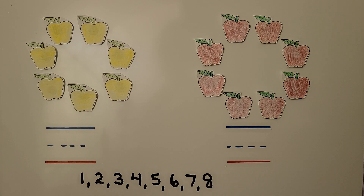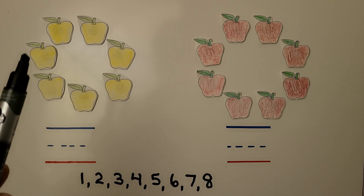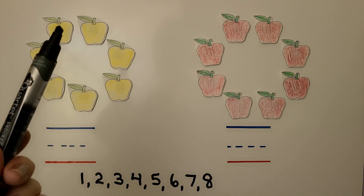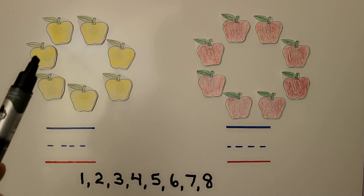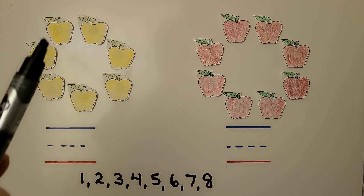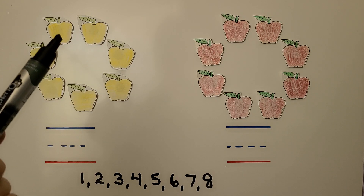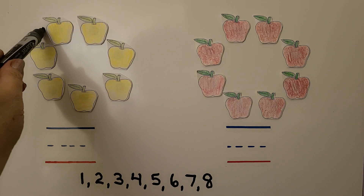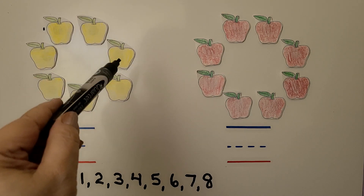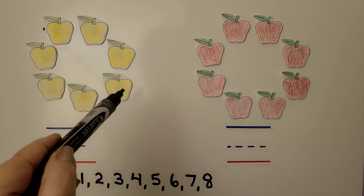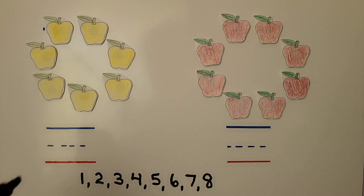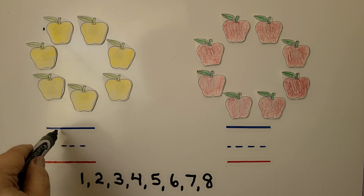We have to be very careful that we don't count the apples two times. So if we're going to start here, that'll be the first apple we count, then this will be the last apple we count if we go around. We can start here with one, two, three, four, five, six, seven. Seven apples. We can write the number seven.